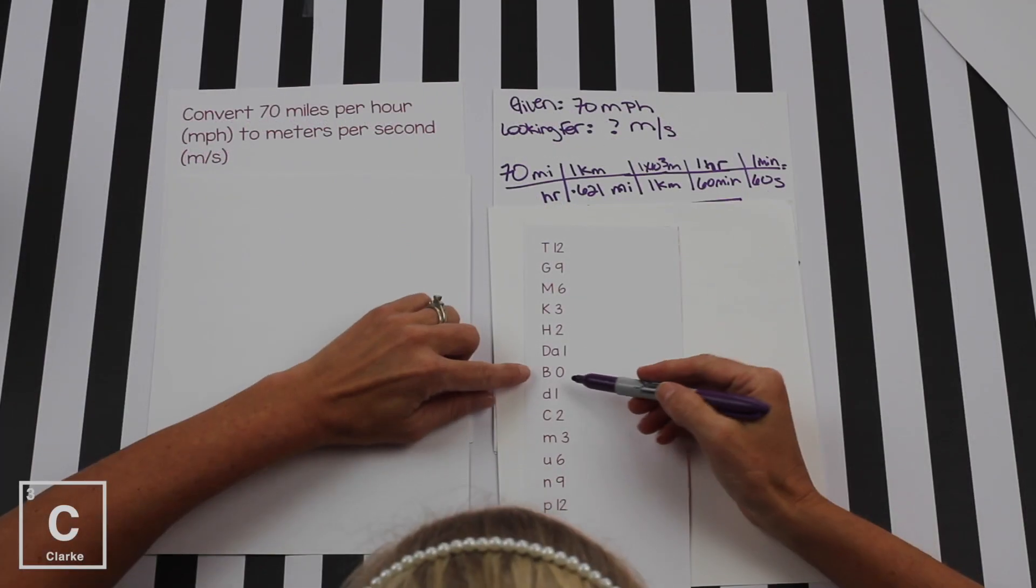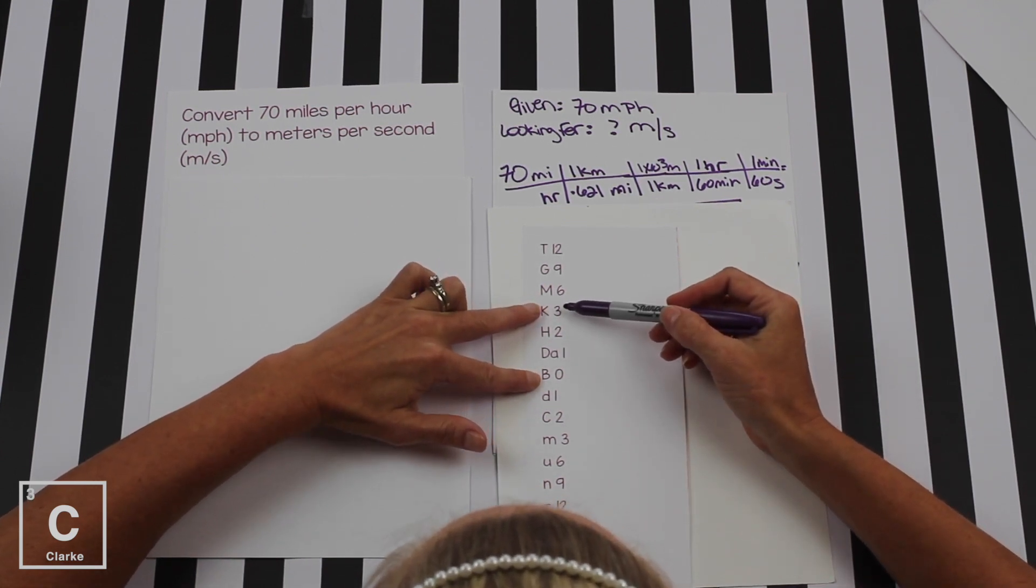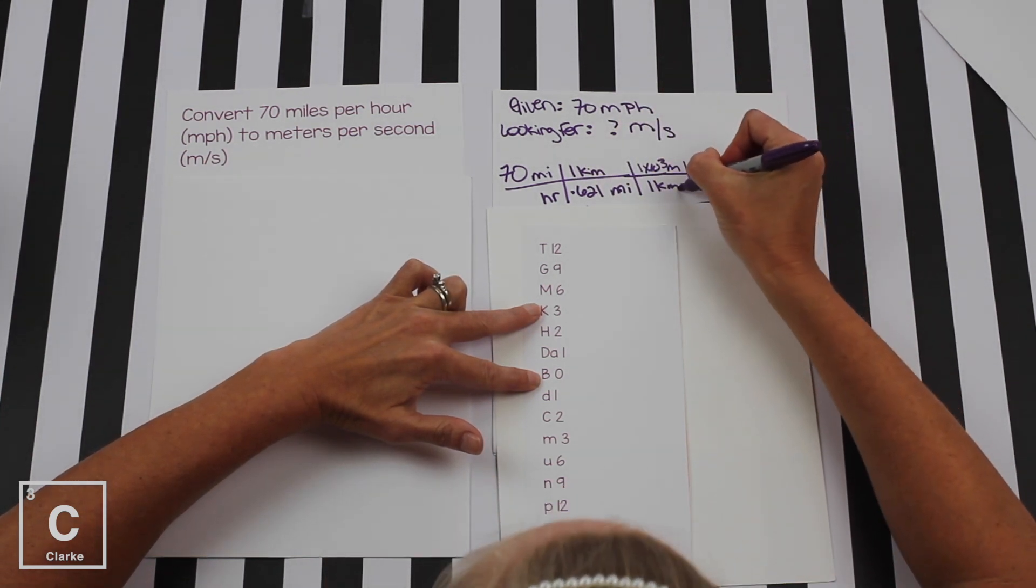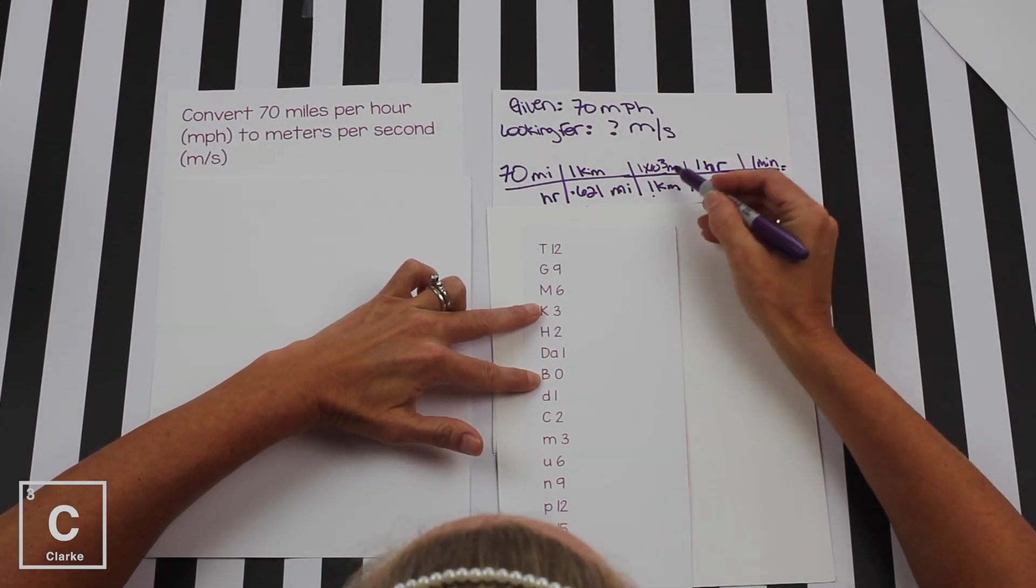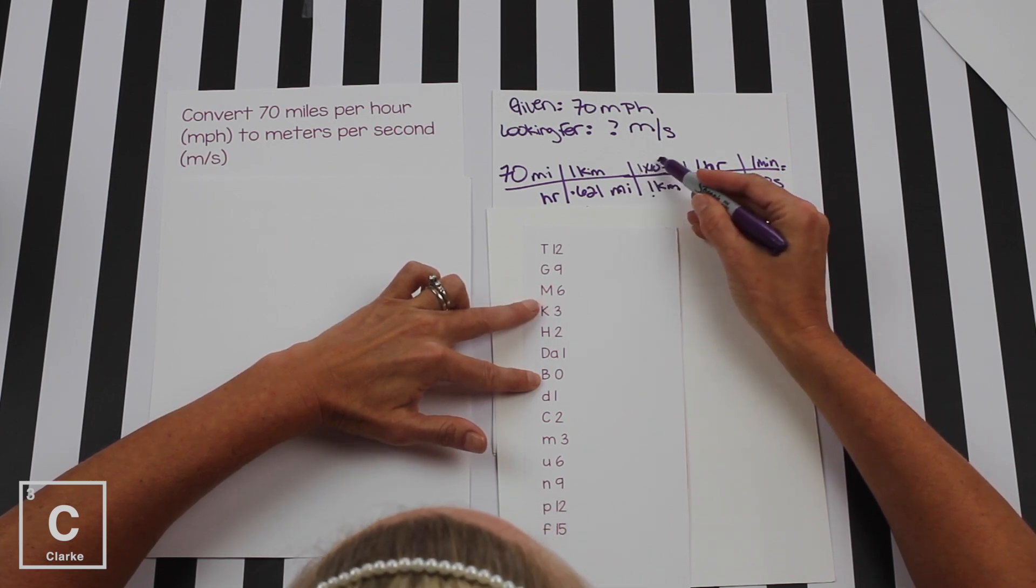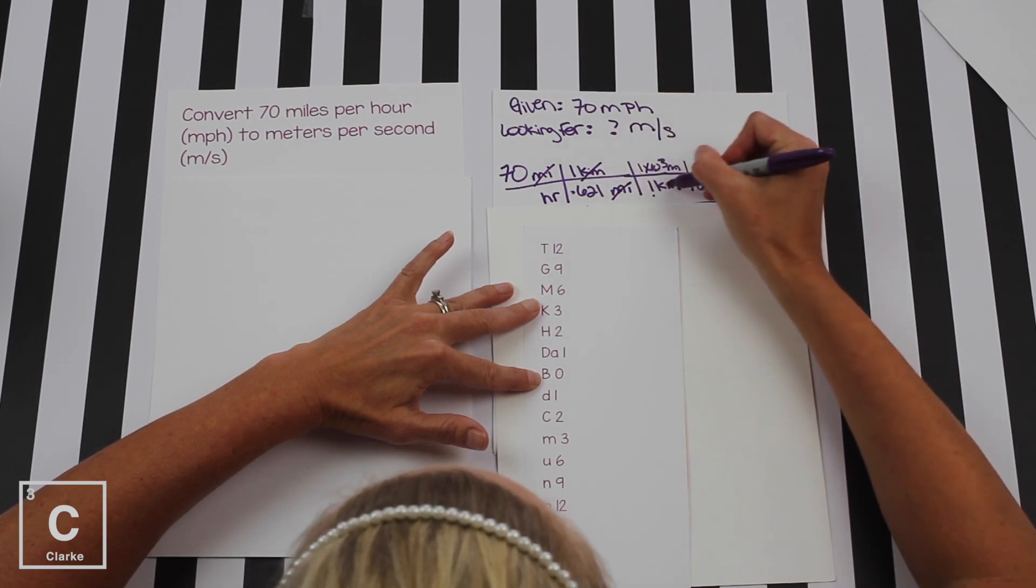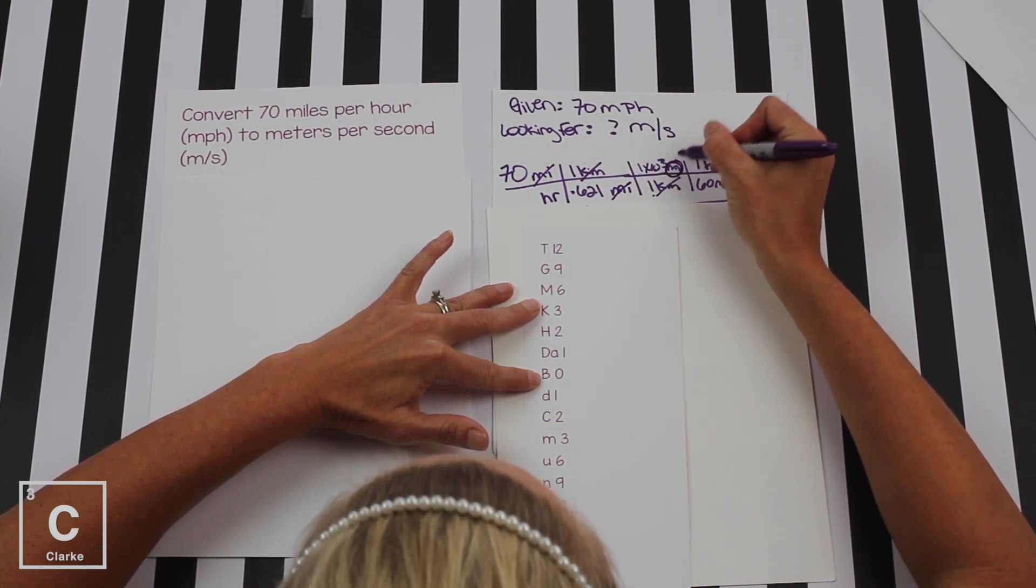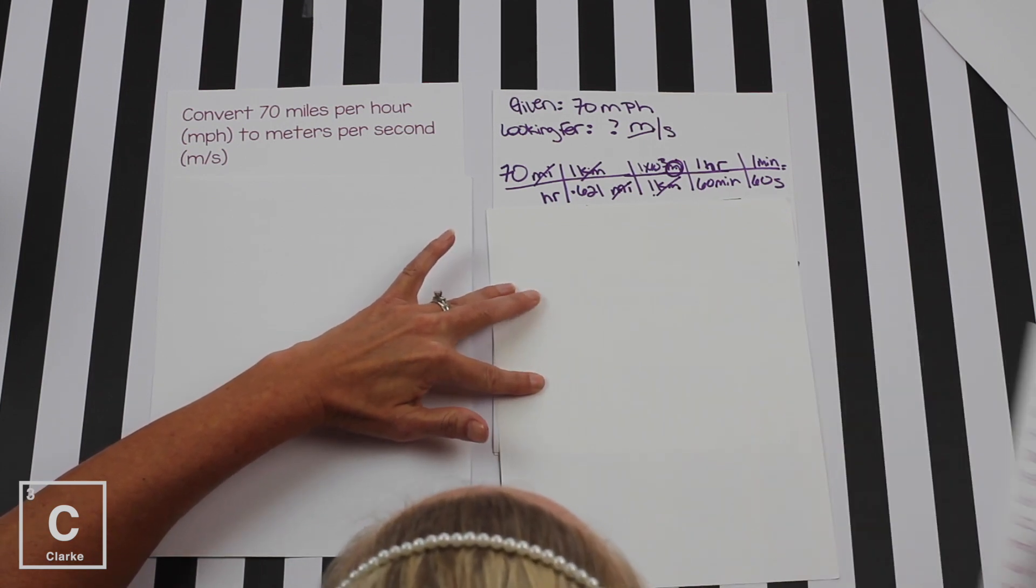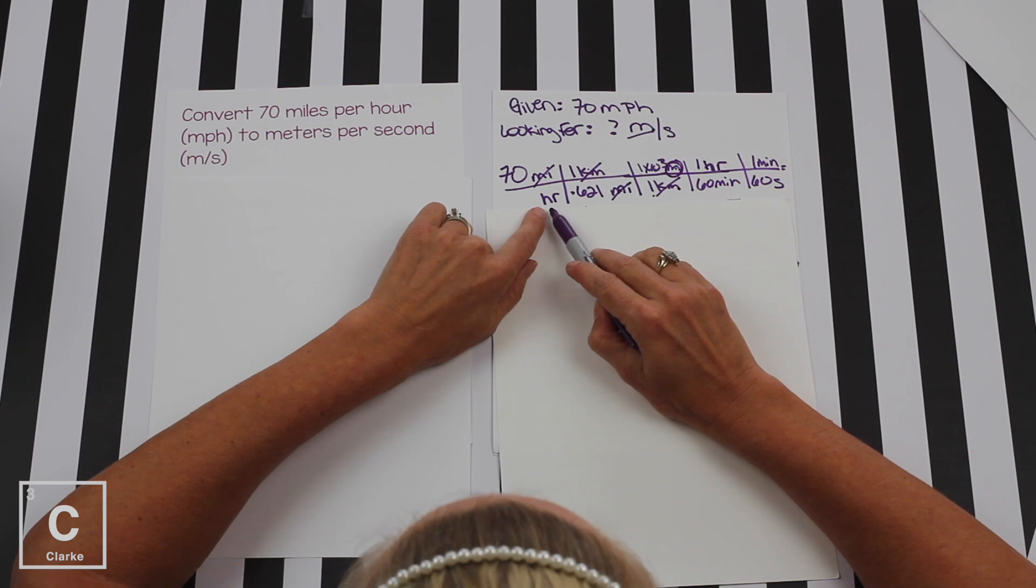Now we can convert our kilometers to meters. We just practiced that. Base unit is meters. We're going to kilometers. Kilometers is on top, it's bigger, it gets a 1. We brought kilometers down to keep it diagonal. We give it a 1 because it's the bigger unit. Meter gets the times 3, 1 times 10 to the 3. So our miles canceled, our kilometers canceled, and we have meters on top. That's what we needed. We're halfway there.